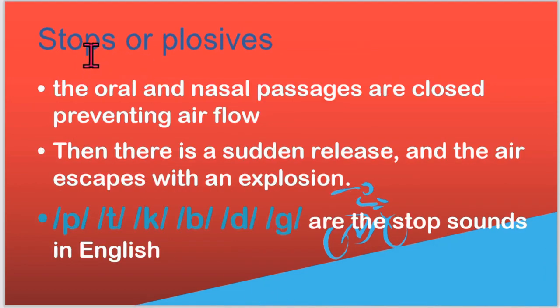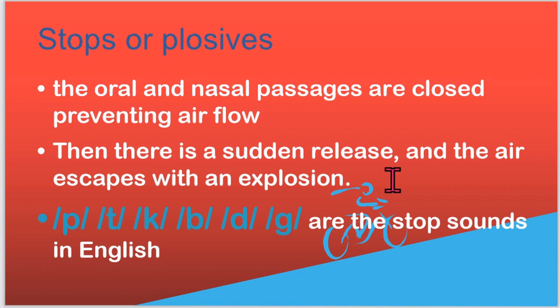In the first category, we have the stops or plosives. This is a manner of production where the oral or nasal passages are first closed and then suddenly released, and the air escapes with a plosive — like in P, where the lips close the mouth cavity and suddenly release, and B, again a bilabial sound. In T, the tongue touches the alveolar ridge and then suddenly releases. P, T, K, B, D and G are the plosive sounds of English.